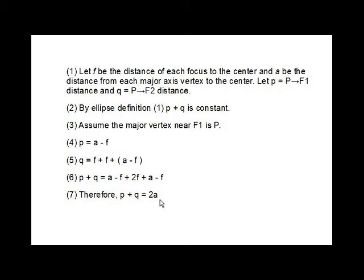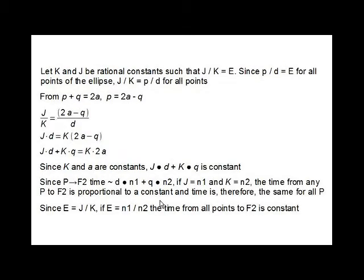With these preliminaries out of the way, let's first tackle the equal path proof. We invent two constants J and K for which J over K equals E. We don't know what their actual values are, but since P over D equals E for all ellipse points, J over K equals P over D for all points.